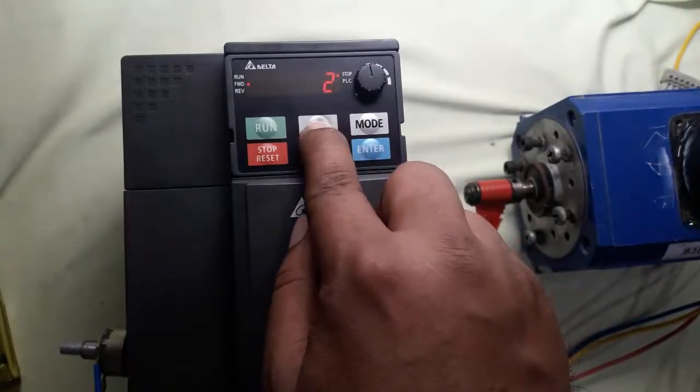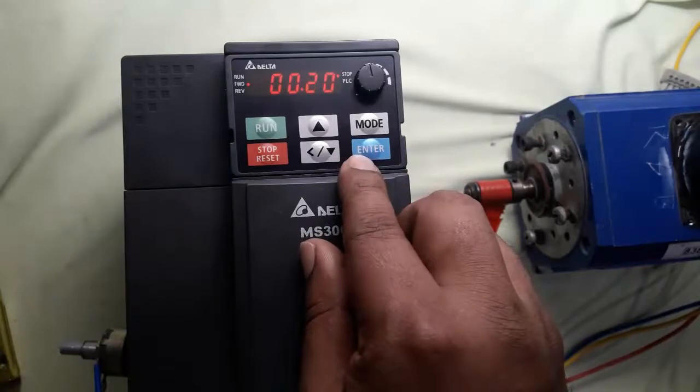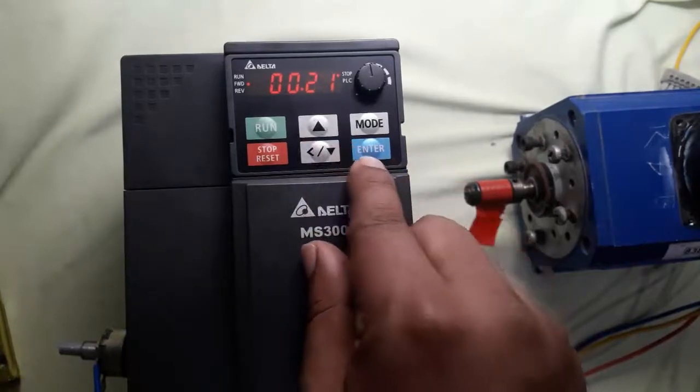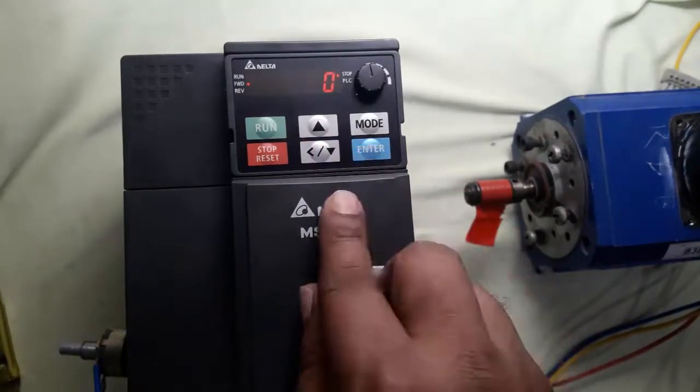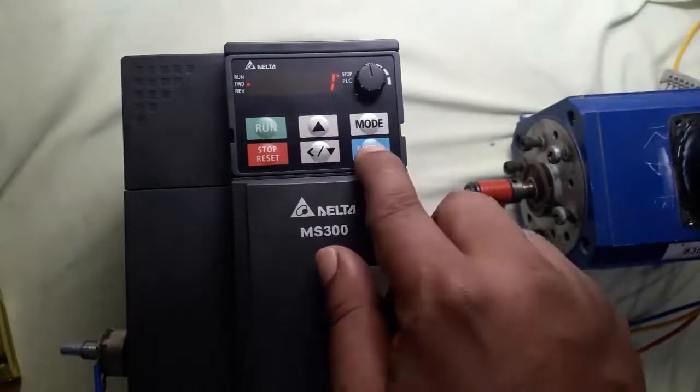Here we set external analog input parameter 2. And parameter 21 we set to 1 as the operation command of external terminal.